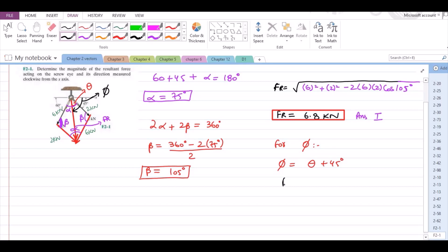So, for theta, let us consider our triangle. This is O, this is A and this is B.